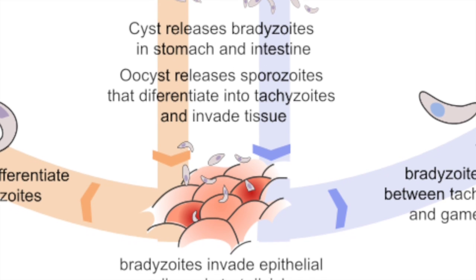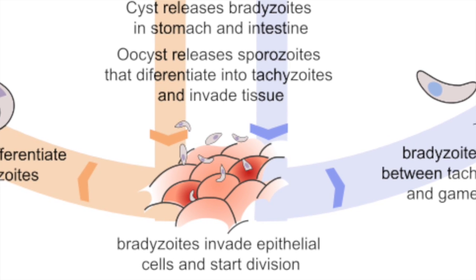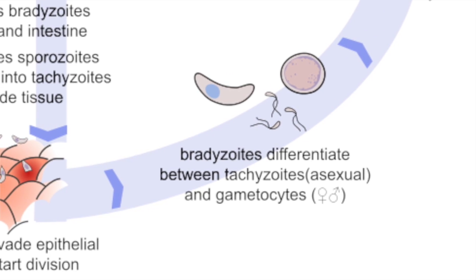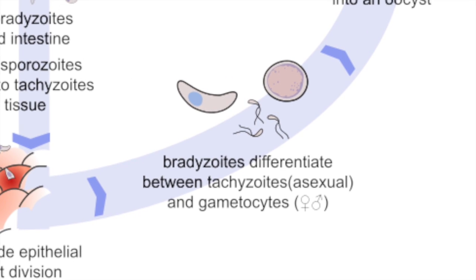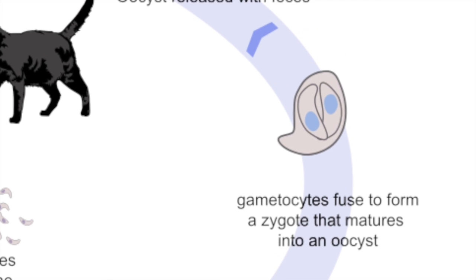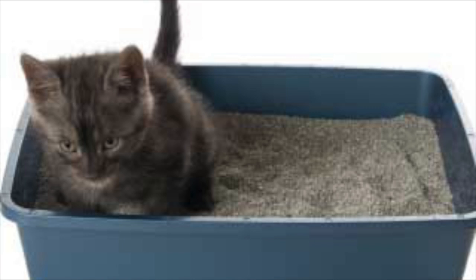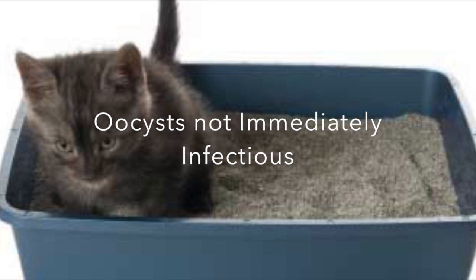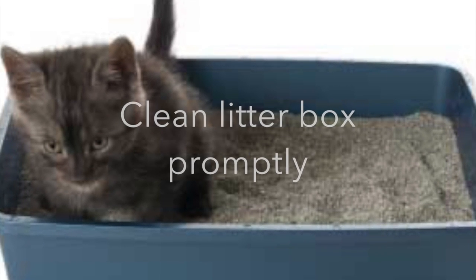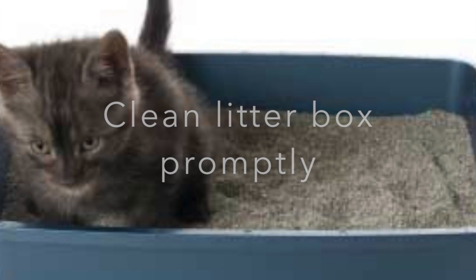In both cats and other mammals, bradyzoites invade epithelial cells and start division. In cats, the cells will differentiate into gametocytes which fuse to form a zygote that matures into an oocyst. The oocyst will be released by feces and the cycle continues. The oocysts excreted in cat feces are not immediately infectious, providing a great strategy to reduce risk to cat owners.